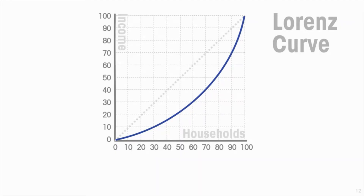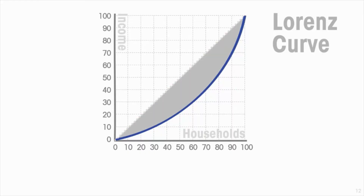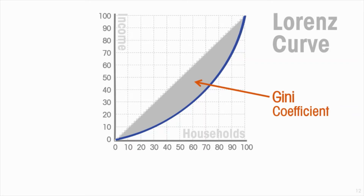For a numerical measure we can thank Corrado Gini, an Italian statistician, around seven years after Max Lorenz came up with his curve. If the degree to which the Lorenz curve deviates from the diagonal is correlated with the degree of inequality, then the area between the diagonal and the Lorenz curve is a measure of inequality. The Gini coefficient is based on that area. We can't use the absolute value of the area, because that would depend on the scale of the graph.